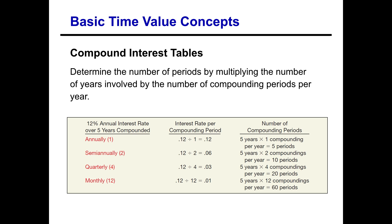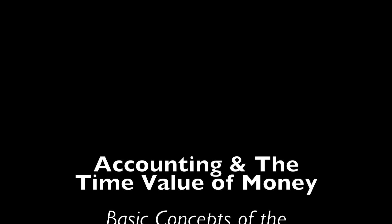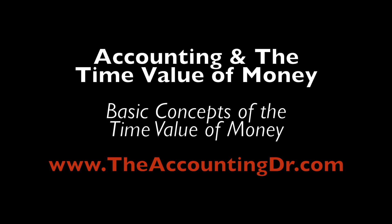Under time value of money, we don't only look for present value and future value amounts. If you know both the present value and future value, you may need to solve for the number of periods. In addition, you can use time value of money tables to find the necessary interest rate to make those numbers work.